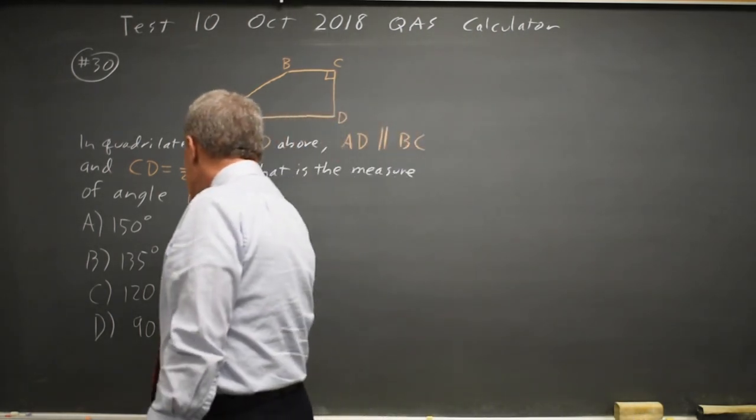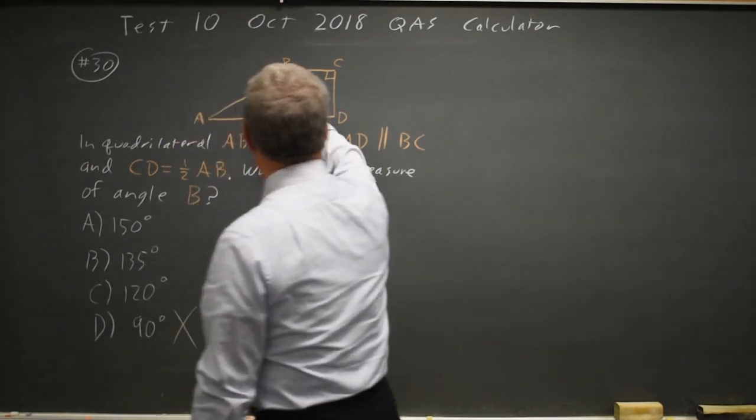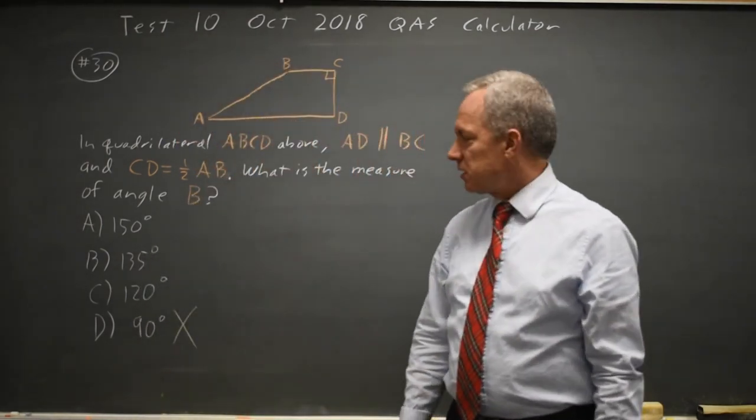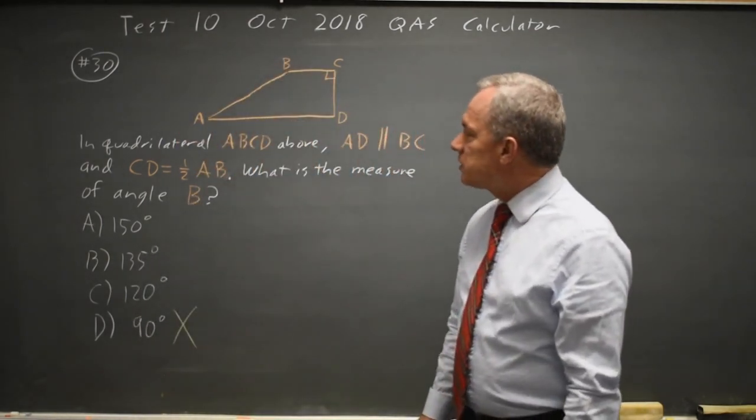Clearly, choice D is not correct because angle B is clearly greater than 90 degrees. You can use estimation.